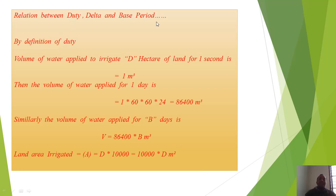Now, relation between duty, delta, and base period. By definition of duty, volume of water applied to irrigate capital D hectare of land for one second is one meter cube. Then the volume of water applied for one day is 1 × 60 × 60 × 24, which equals 86,400 meter cube.